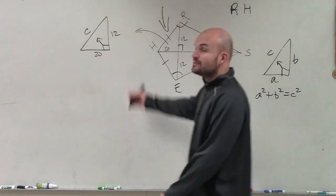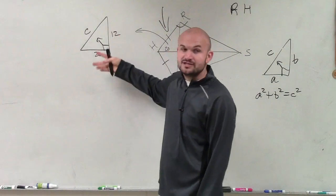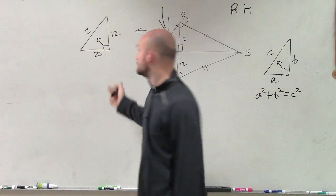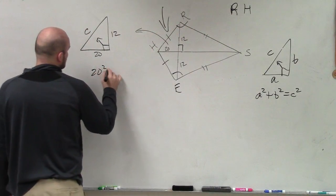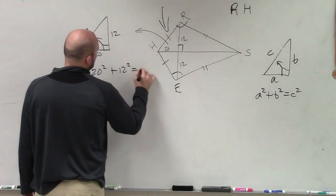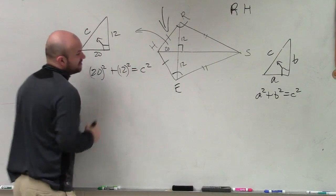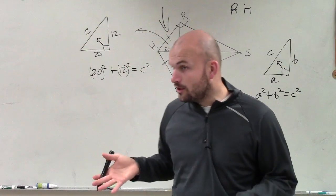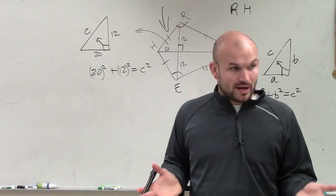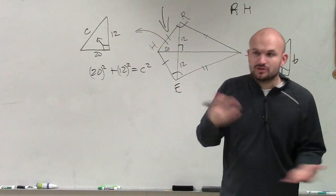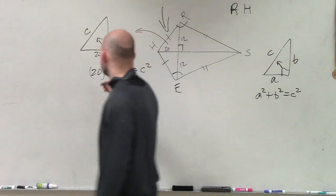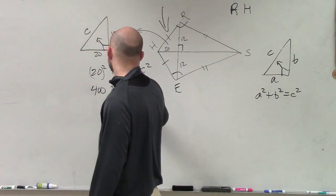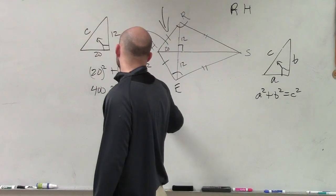So now let's create the Pythagorean theorem. The Pythagorean theorem, again, states our two legs squared added together equals our hypotenuse. So I'll say 20 squared plus 12 squared equals C squared. Now you might need a calculator, but I will tell you, moving on to mathematics, you're going to want to know at least up to 15 squared, at least, because those numbers will come up a lot. So 20 squared is 400 plus 12 squared is 144 equals C squared.